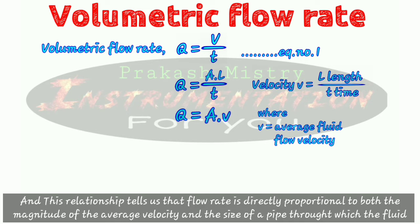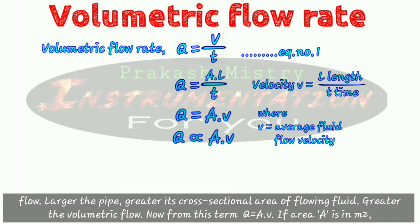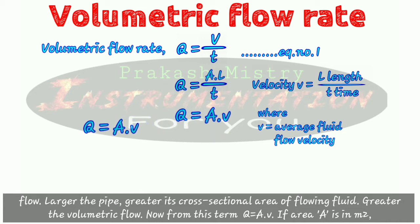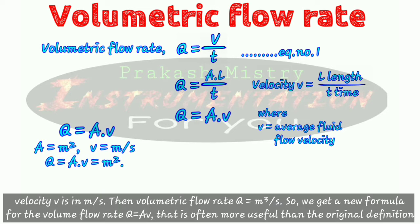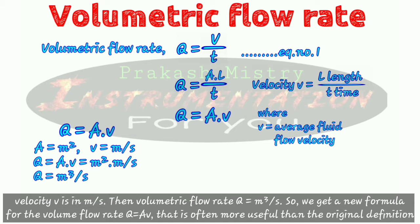This relationship tells us that flow rate is directly proportional to both the magnitude of the average flow velocity and the size of the pipe. The larger the pipe, the greater its cross section area, and the greater the volumetric flow rate. If area A is in square meters and velocity V is in meters per second, then the volumetric flow rate Q is in cubic meters per second.